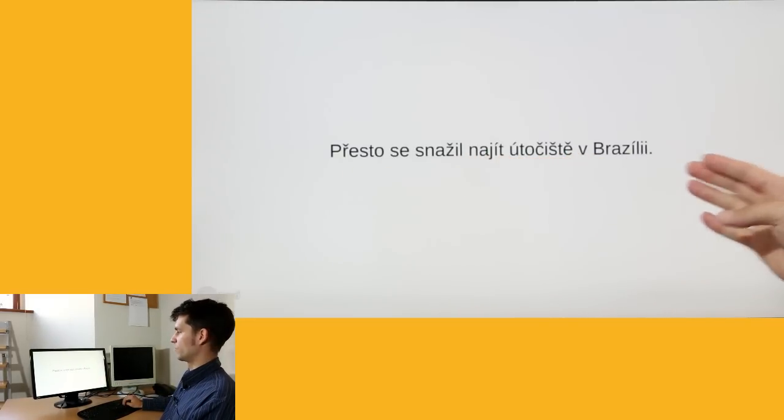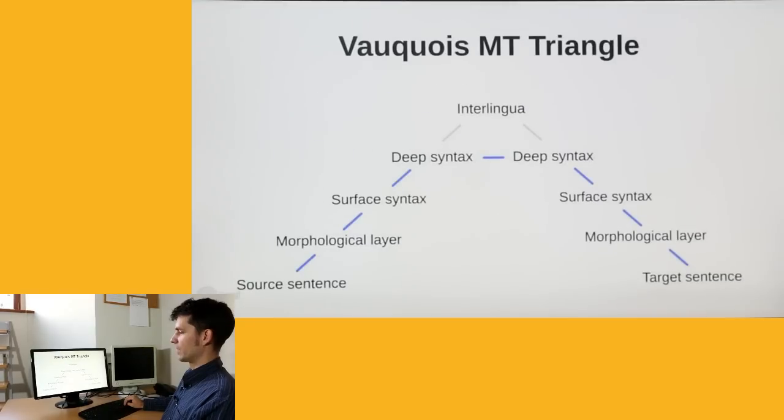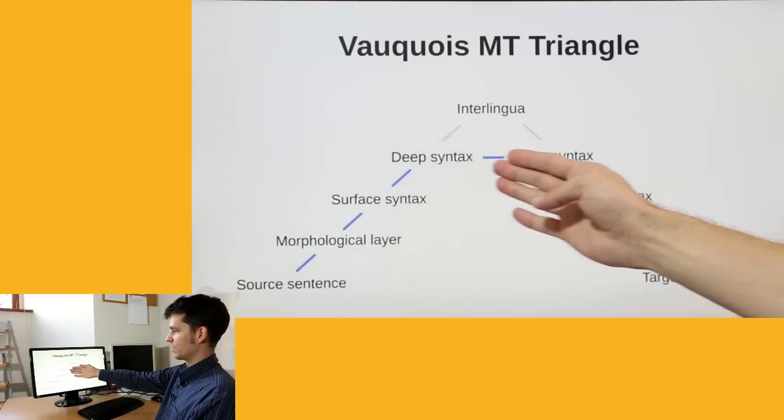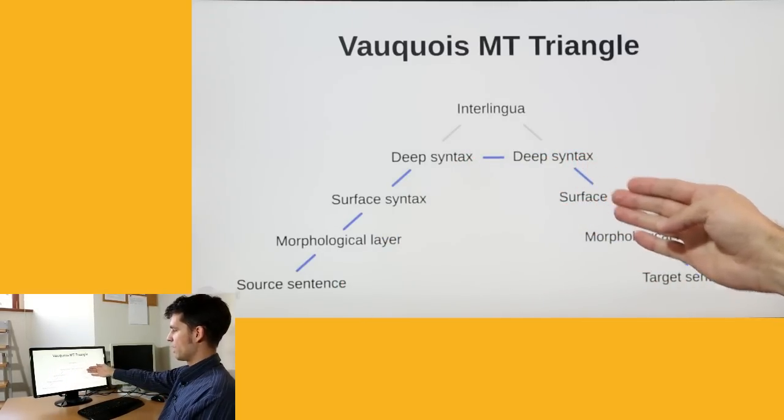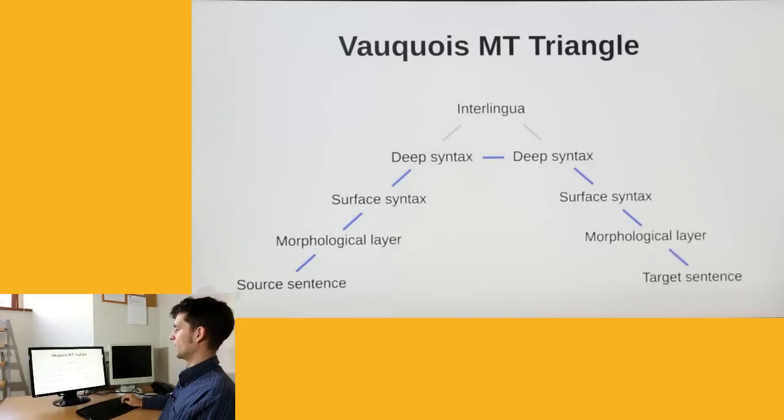That was the most prototypical approach to transfer-based MT. This input sentence is parsed to some deep representation, transferred, and then the final string is generated along the similar lines.